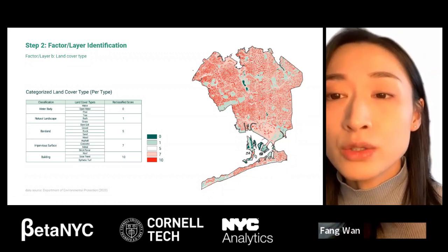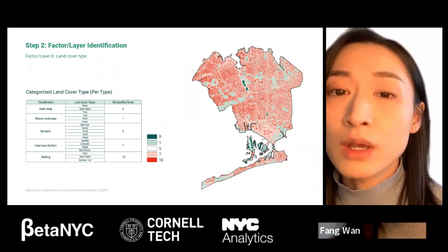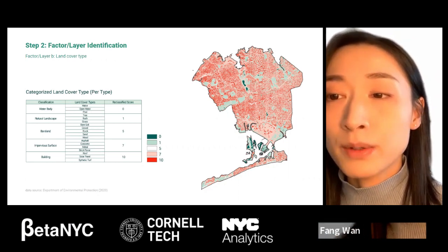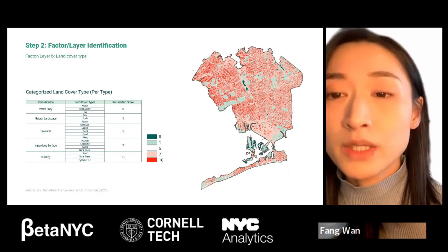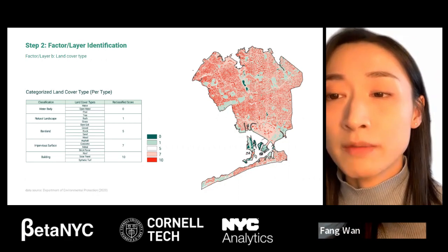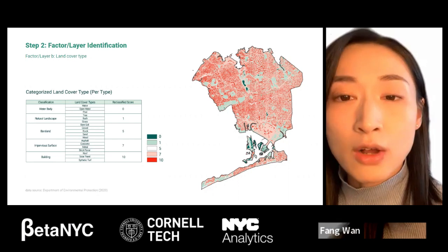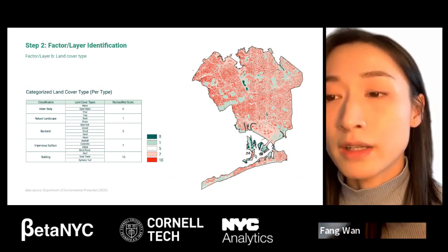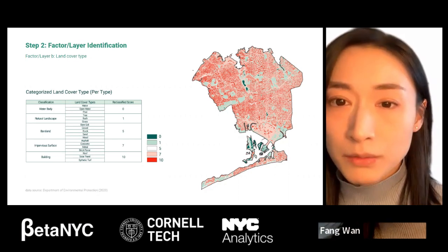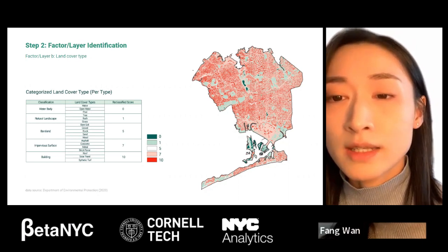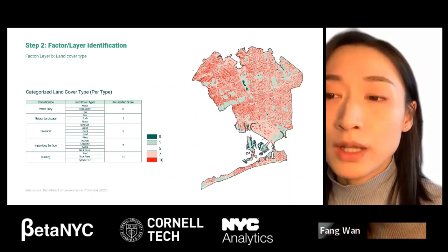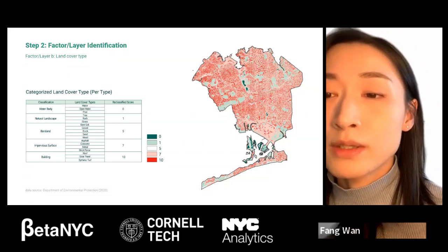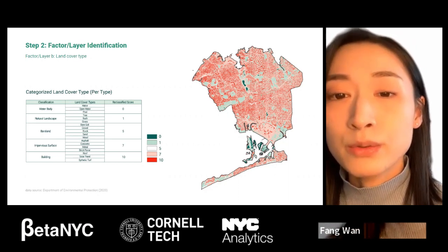Land cover type contributes significantly to the formation of urban heat islands, specifically materials with low heat capacity. The original dataset from the Department of Environmental Protection's citywide parcel-based impervious area, found on the New York Open Data Platform, had 18 detailed material types forming New York City's built environment. Based on scholars Jiang, Cheng, Zhao and others researching thermal contributions from different urban land cover types, our project divided the 18 land cover materials into five categories. With water as the baseline, all land cover types were reassigned with scores ranging from 0 to 10 by their thermal contributions. This layer is weighted by two for the final decision layer.